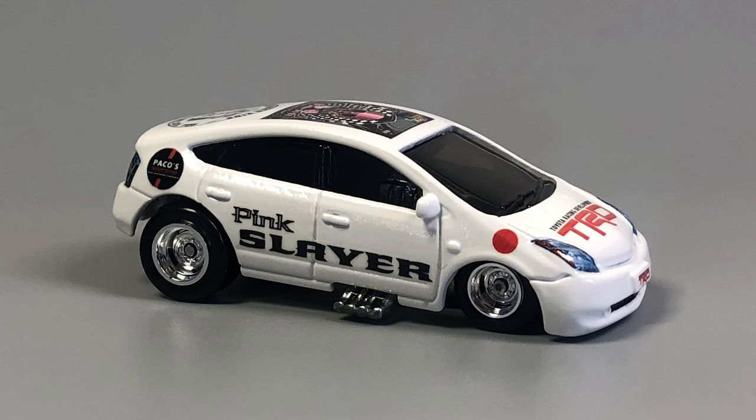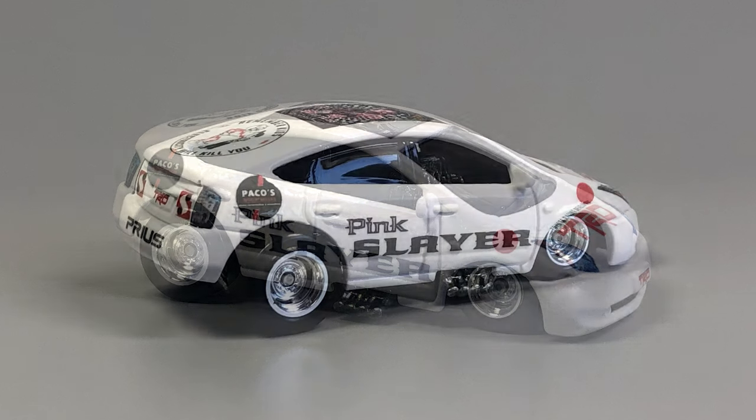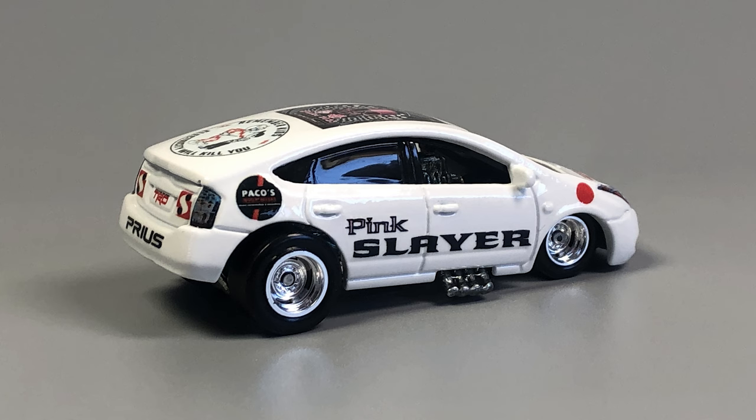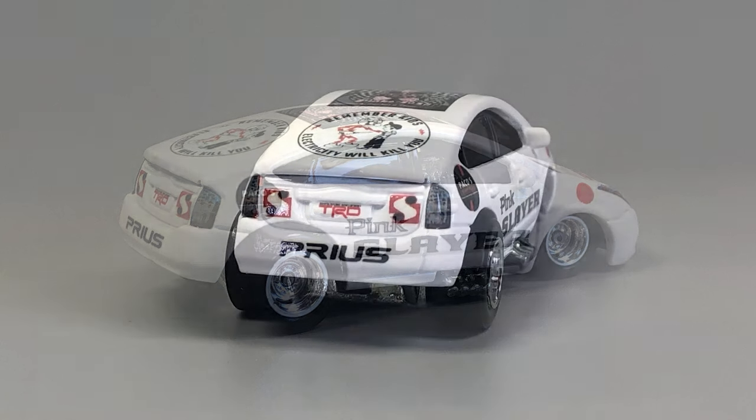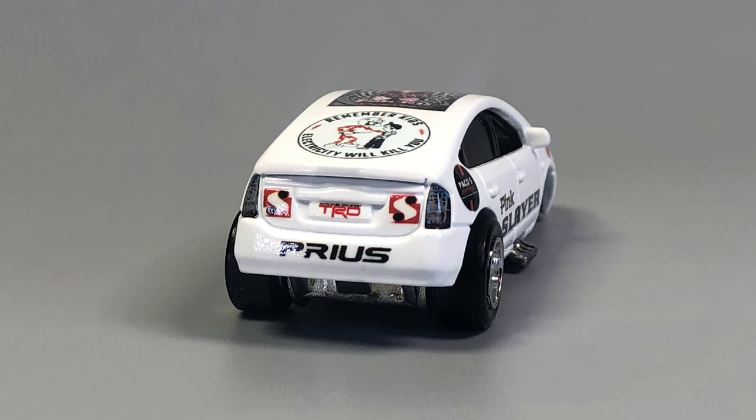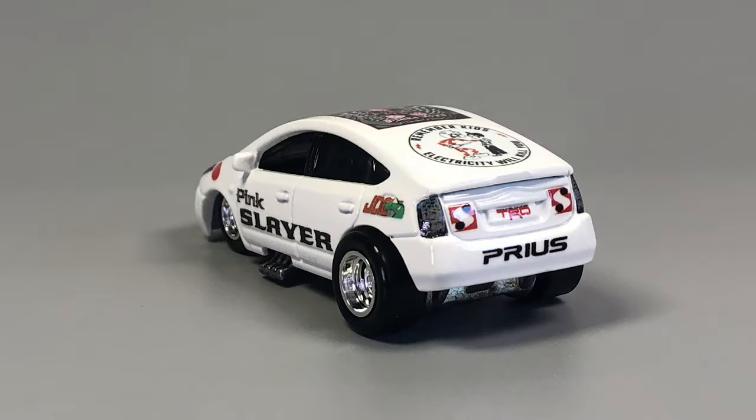So there's a rising sun on it. There's JDC and Paco's logos. There's my logos. There's Toyota Racing on there. There's the Remember Kids, Electricity Will Kill You on the top, because it's a Prius.